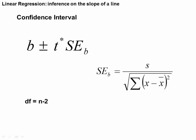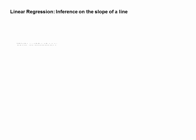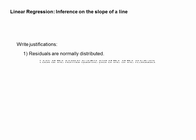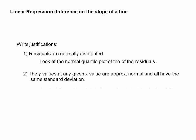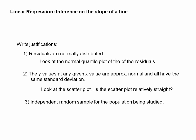Our degrees of freedom are still n minus 2, so we'll move forward with that. Your linear regression inference on the slope — the justifications for your intervals are similar to what we had to do before for our t-tests, or our linear regression t-tests.